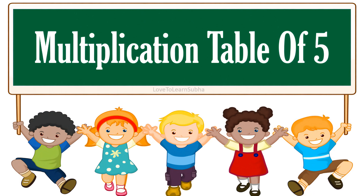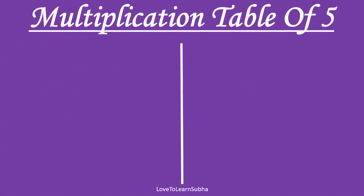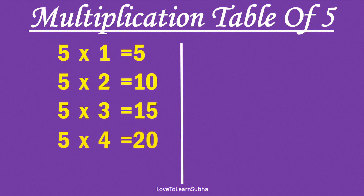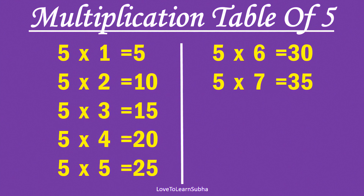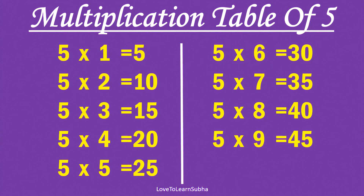Multiplication table of 5. 5×1 is 5, 5×2 is 10, 5×3 is 15, 5×4 is 20, 5×5 is 25, 5×6 is 30, 5×7 is 35, 5×8 is 40, 5×9 is 45, 5×10 is 50.